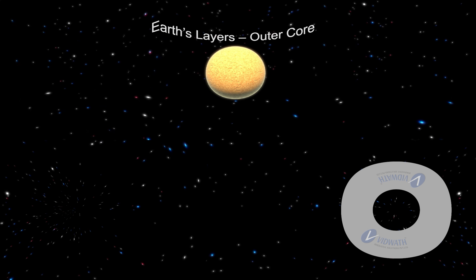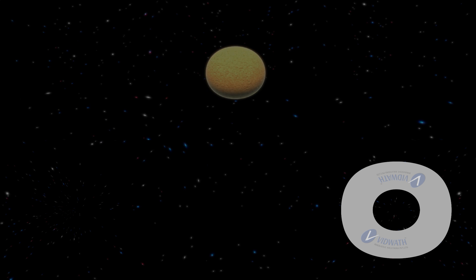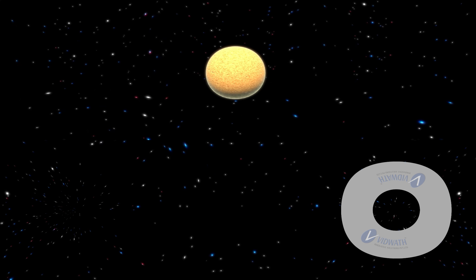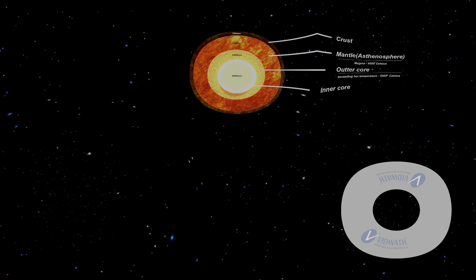Earth's layers, Outer core. The next layer of the Earth is the outer core. This layer is exceedingly hot. It has a temperature of about 5000 degrees Celsius. The outer core consists mainly of liquid iron. It has a depth of 2200 km. The core's mantle boundary is located at 2900 km below the surface of the Earth.